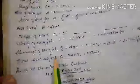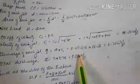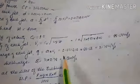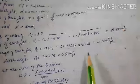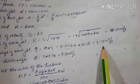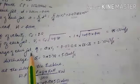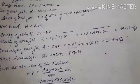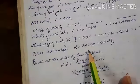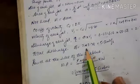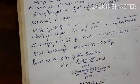Discharge of each jet q = A × V1 = area of one jet × velocity = 2.78 cubic meter per second. Since there are two jets striking the buckets, total discharge = 2 × 2.78 = 5.56 cubic meter per second.